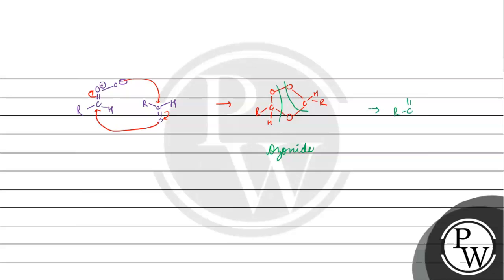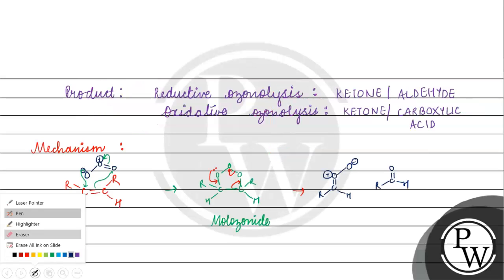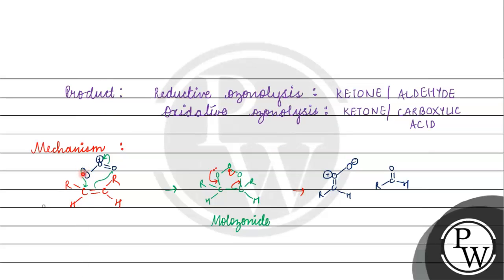Two molozonide molecules are involved. In the first step of ozonolysis, ozone has a minus charge character. The carbon undergoes electrophilic attack based on electron density. This is where the molozonide is formed — the molozonide intermediate is arranged.